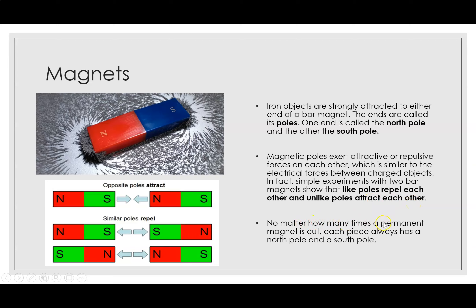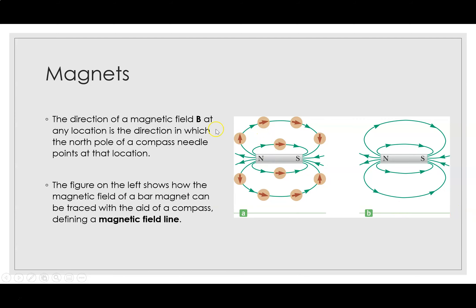No matter how many times a permanent magnet is cut, each piece always has a north pole and a south pole. The direction of the magnetic field B at any location is the direction in which the north pole of a compass needle points at that location.